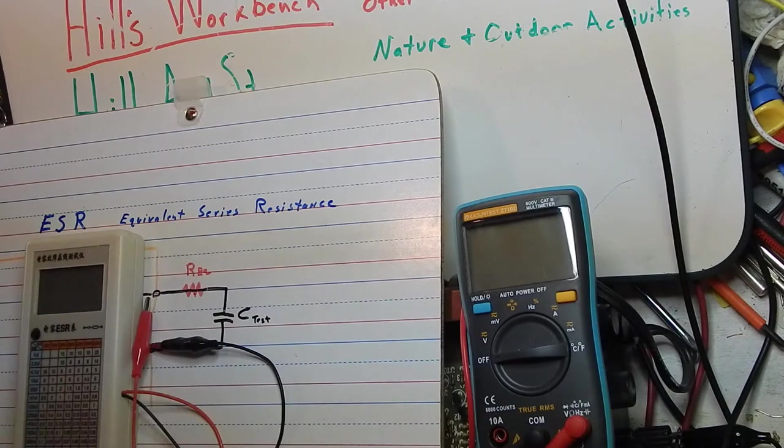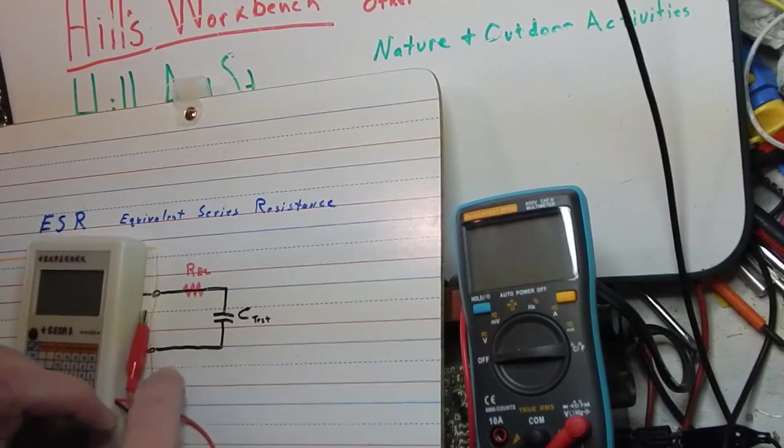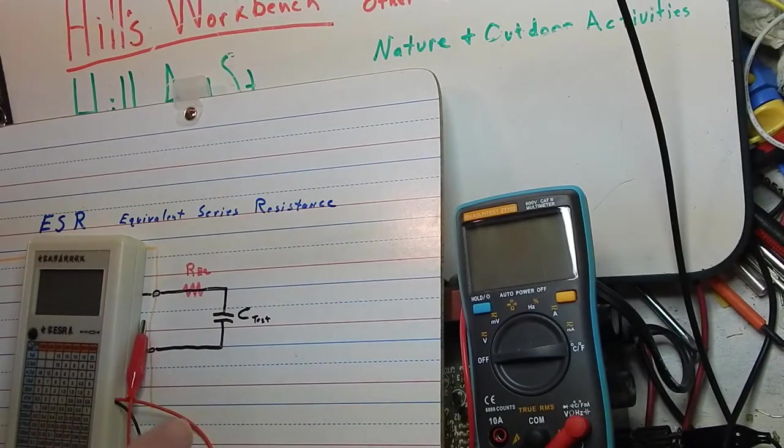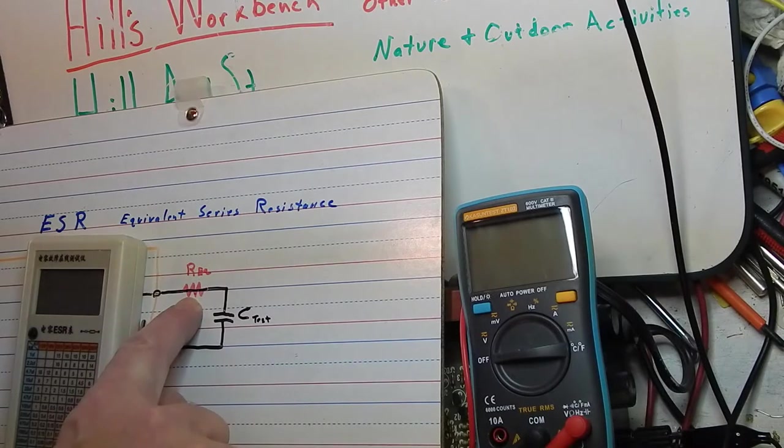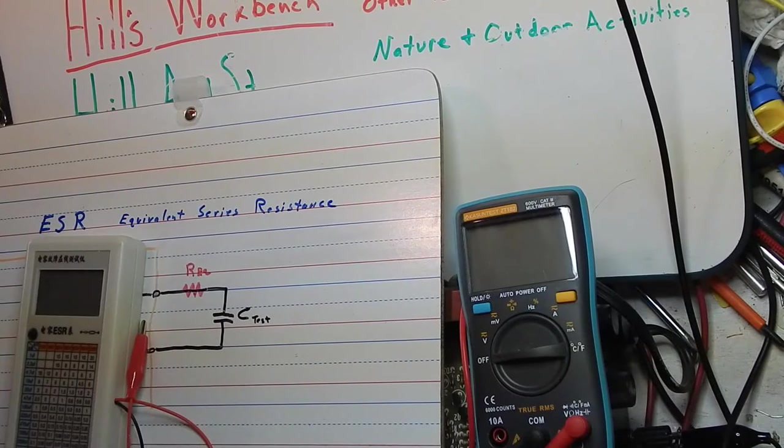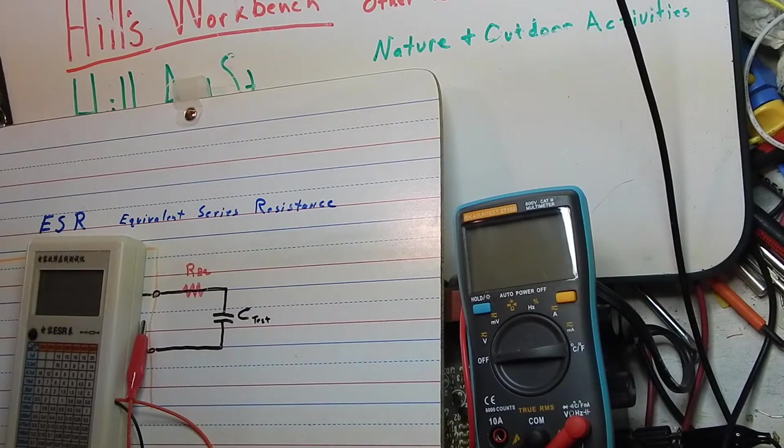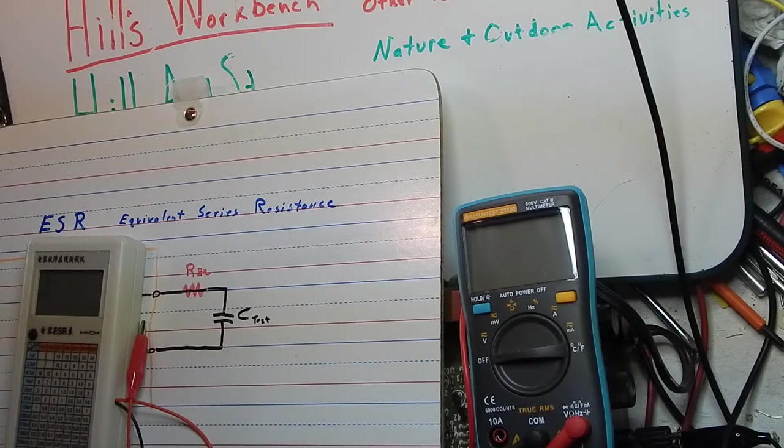By using equivalent series resistance a lot of times you can ferret out bad electrolytic capacitors, and you can ferret them out in circuit too most of the time. This relates to equivalent series resistance, meaning a real capacitor has somewhat of a series resistance into it as if there was a resistor in series at the leads. There's also a series inductance and that is also a factor of electrolytic capacitors.